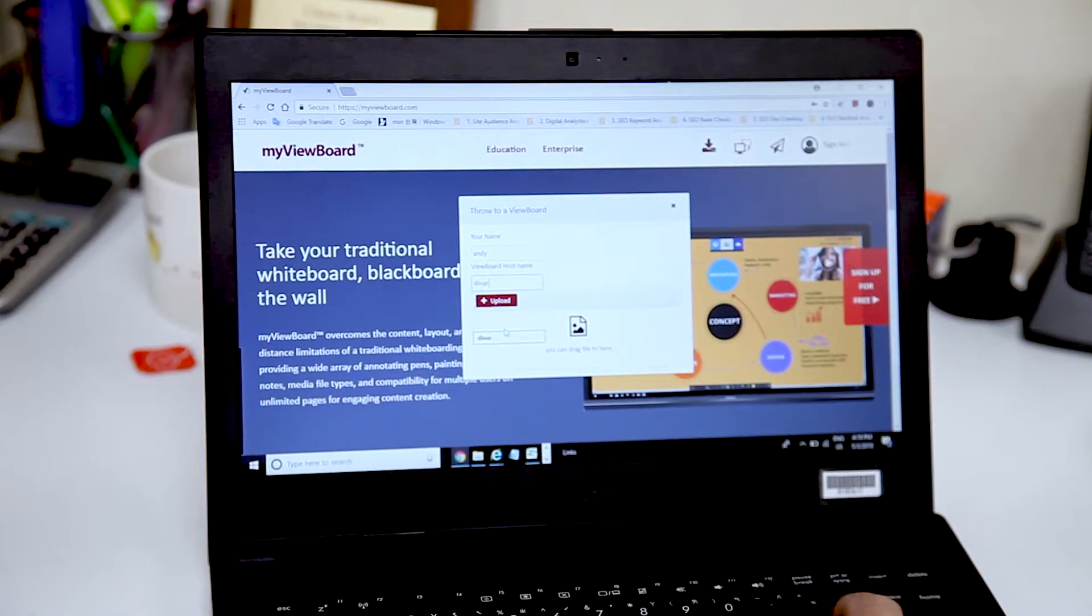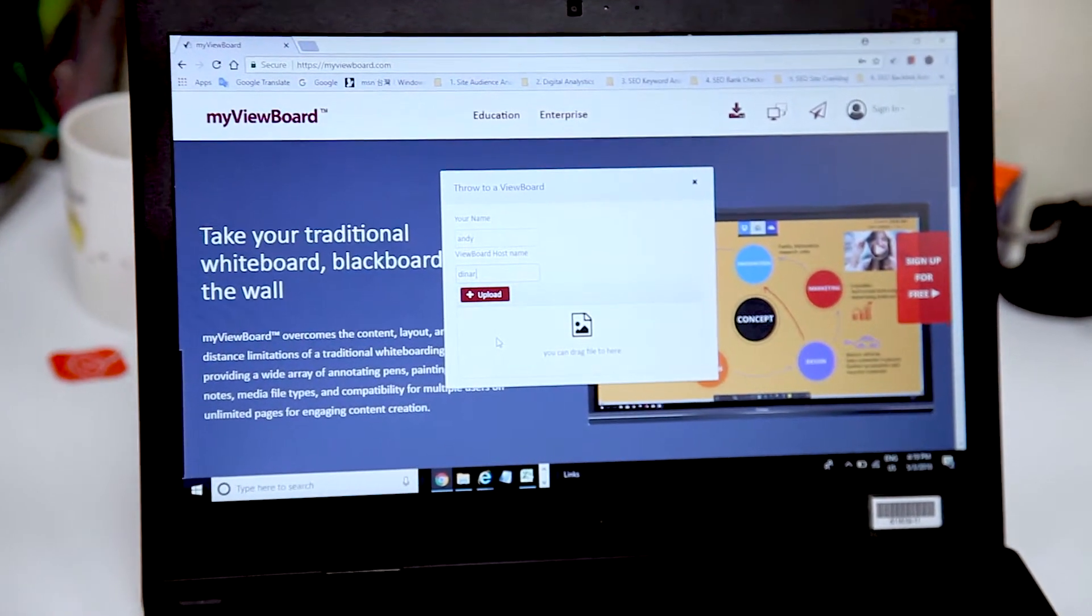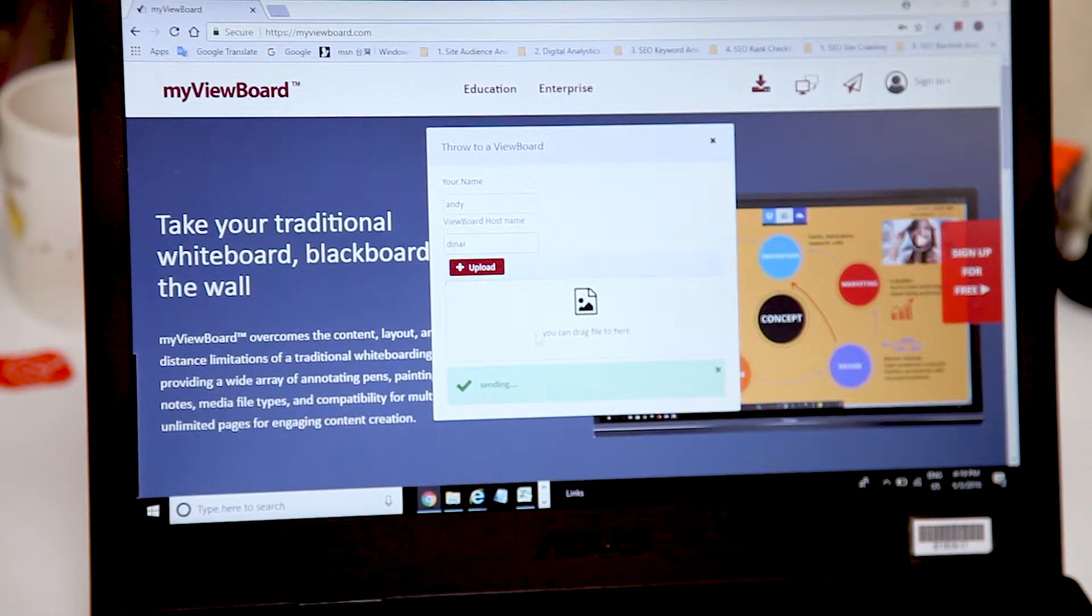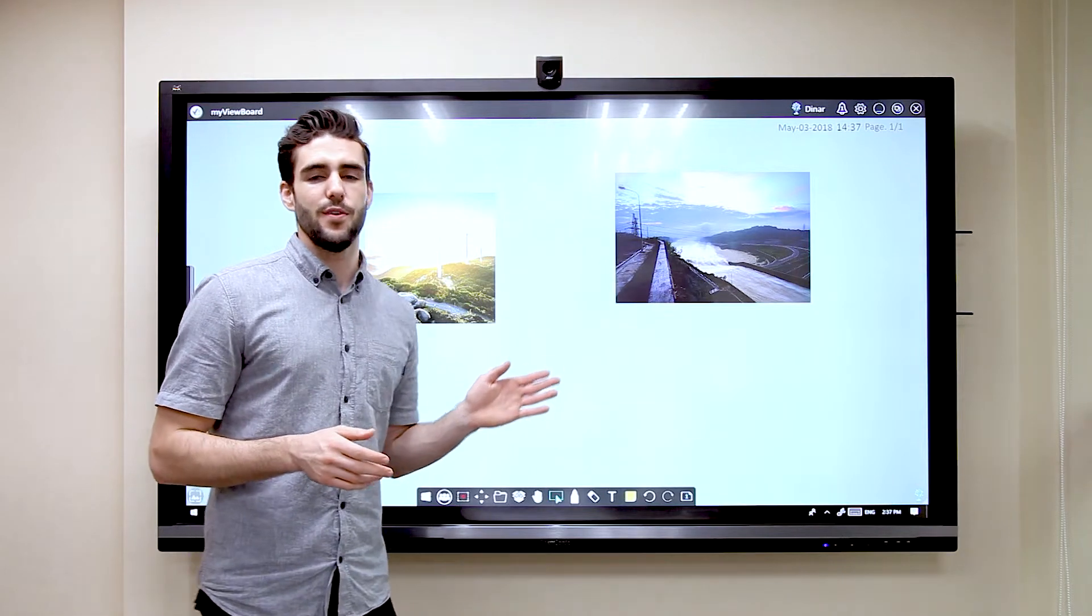Now if you're going to want to throw something from a laptop, you just have to make sure that you're using Chrome browser. And that's how you use the MyViewBoard throw function.